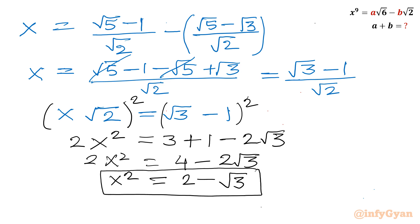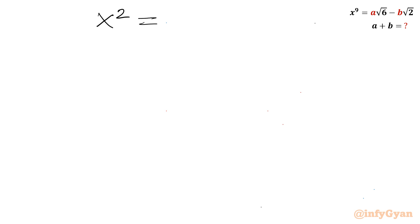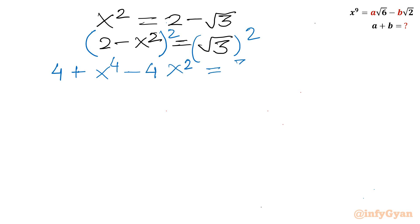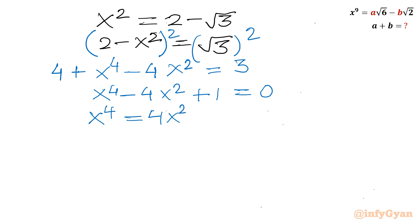Now I will consider squaring once again. But before that I will take x squared to the side of 2. So x squared is equal to 2 minus root 3, or I can write 2 minus x squared equal to root 3. Now consider squaring both sides: a minus b whole square gives 2 squared = 4, plus x to the power 4, minus 2 times 2 times x squared equal to 3. So from here I can write x to the power 4 minus 4x squared plus 1 equal to 0, or x to the power 4 will be equal to 4x squared minus 1.